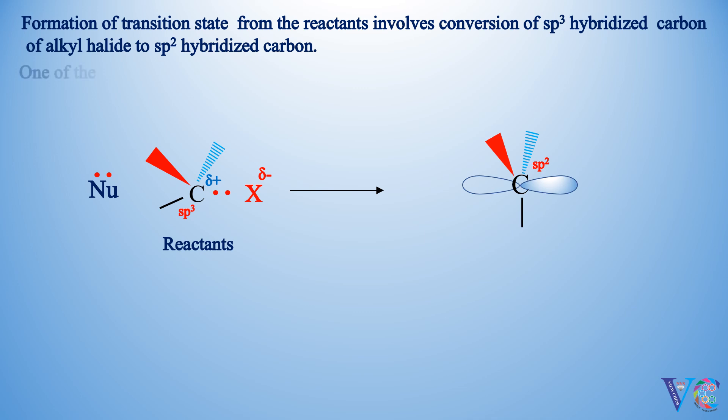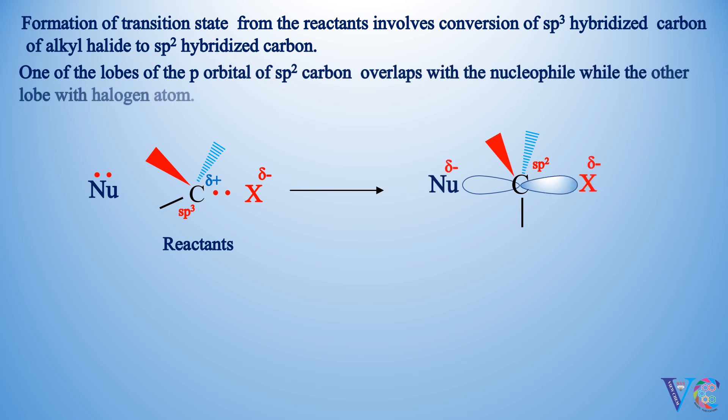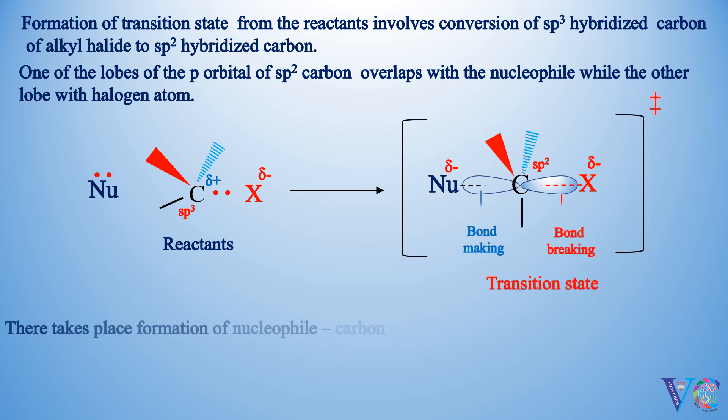One of the lobes of the empty p orbital of sp2 carbon atom overlaps with the nucleophile, while the other lobe with halogen atom. There takes place formation of nucleophile-carbon bond and cleavage of carbon-halogen bond.